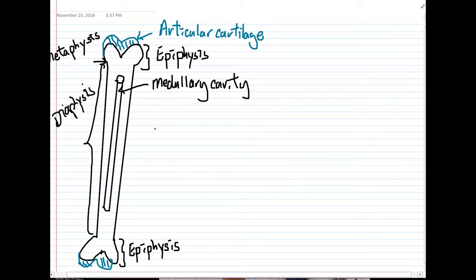However, as a person ages, some of the red bone marrow in certain long bones will then be replaced by yellow bone marrow, which is going to be important for storage of fat.